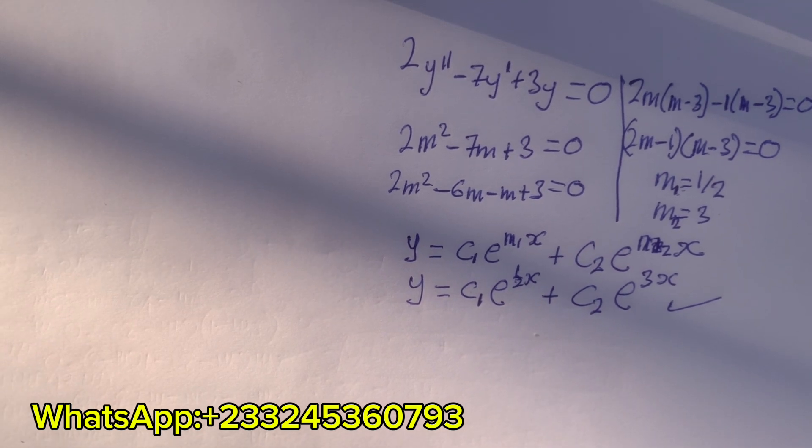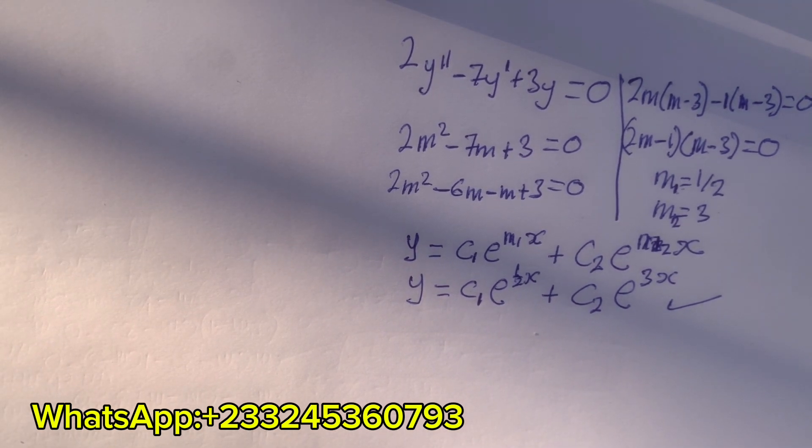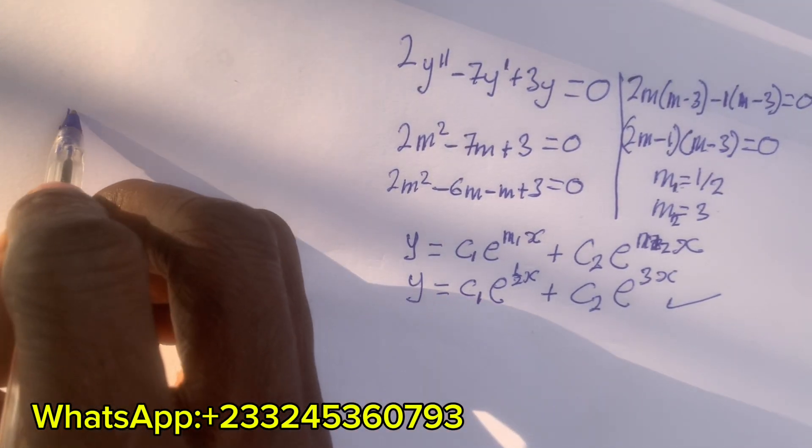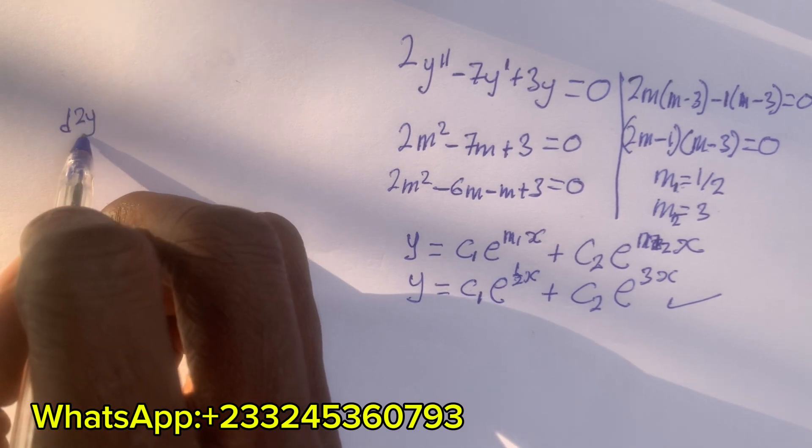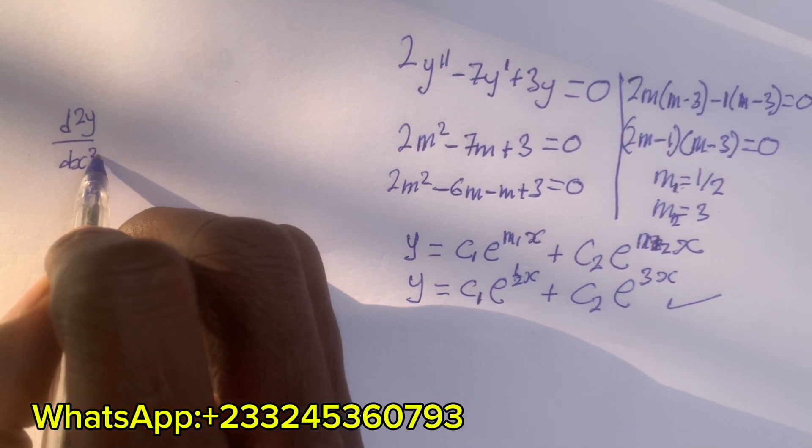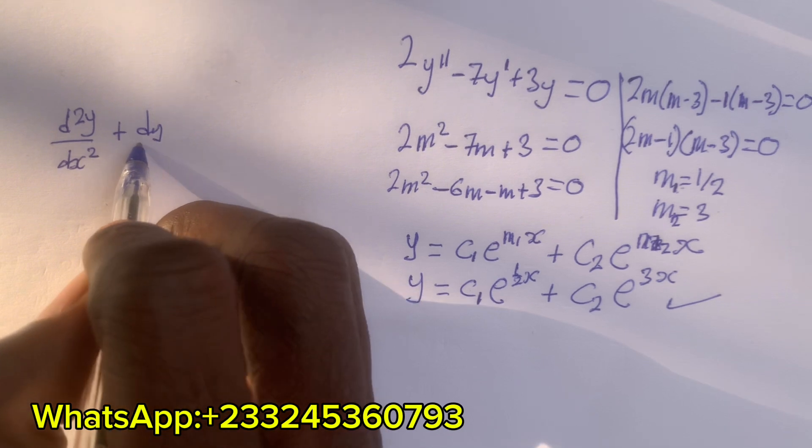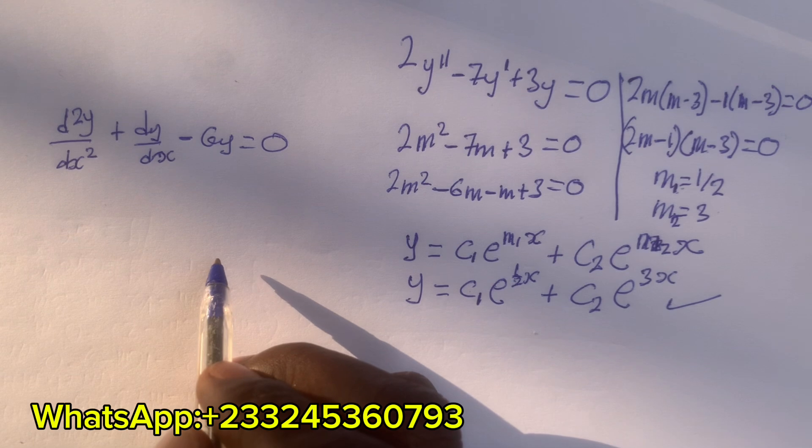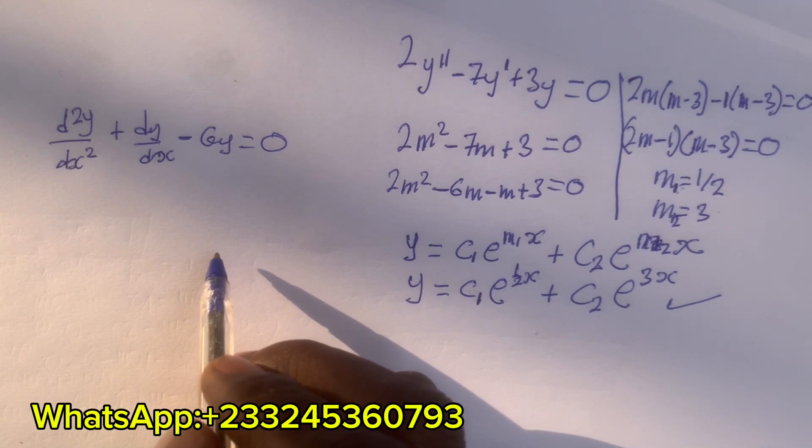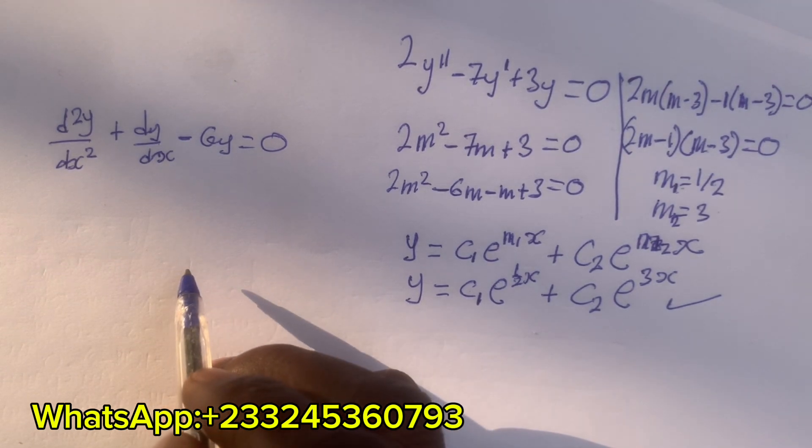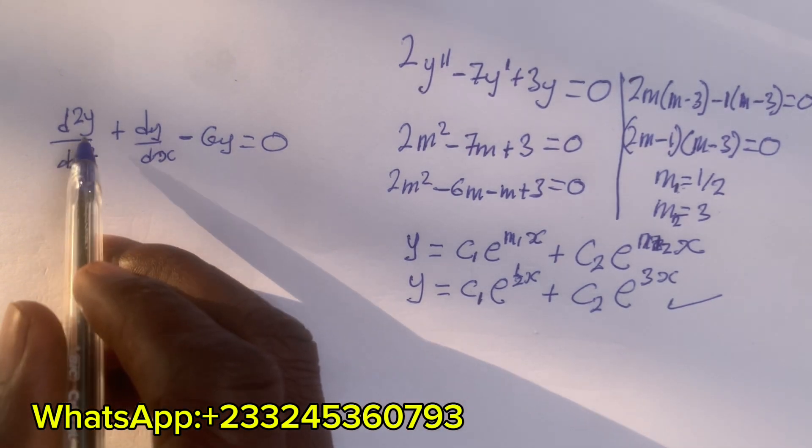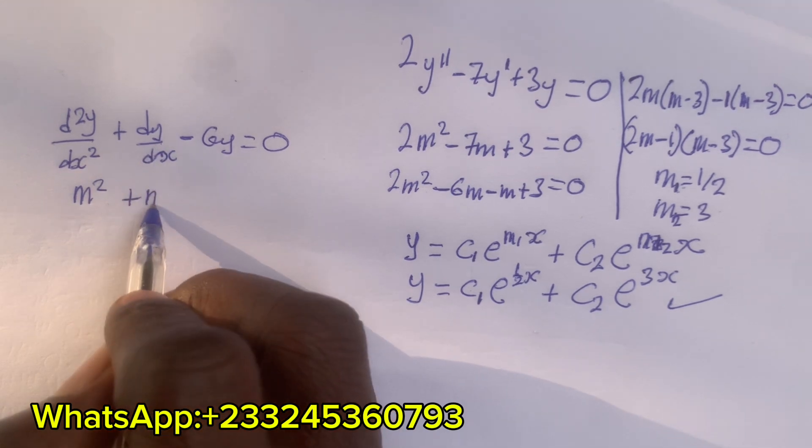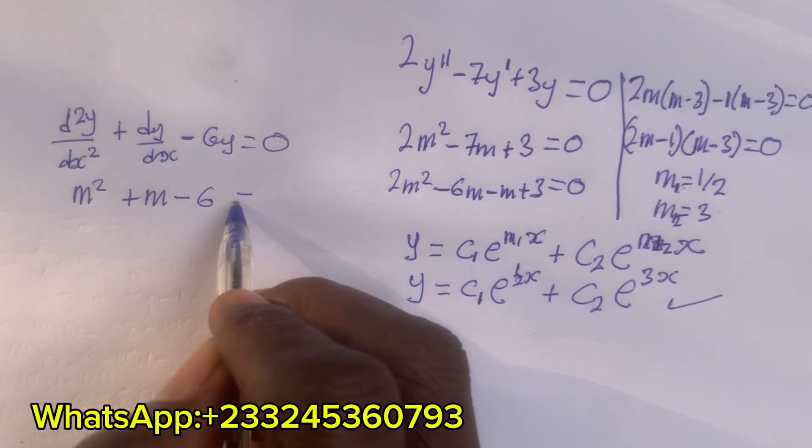Let's try this one, and after that, I give you one for you to try. If I have d²y/dx² + dy/dx - 6y = 0, then we have to find the general solution of this differential equation. This is the second derivative, so we take m² plus, this represents y', so m - 6 = 0.